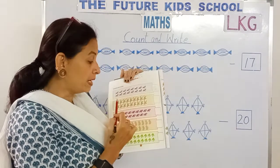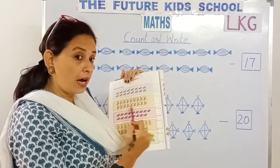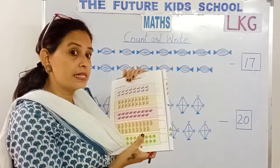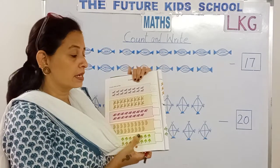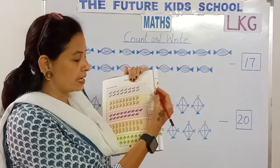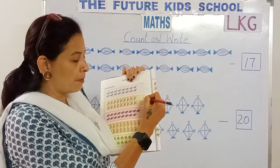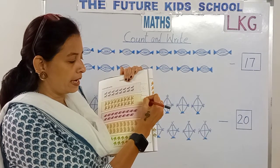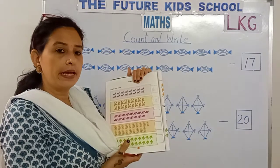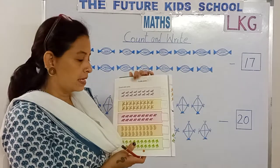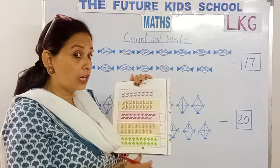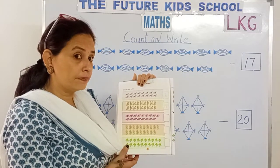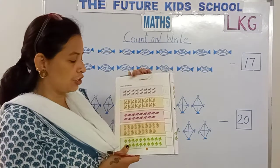How many zips do we have here? 18 zips. 1 and 8, 18. Write the number in this box — 1 and 8, 18. I hope you are counting along with me, children.